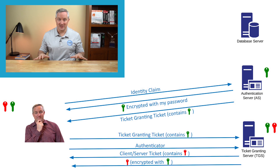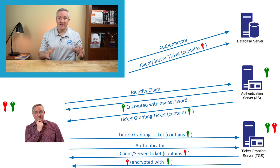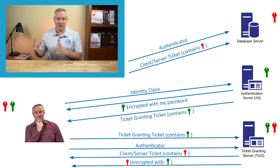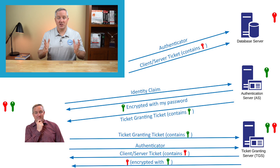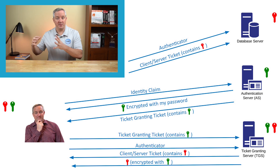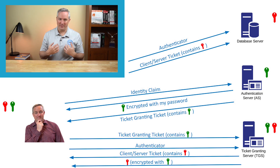After receiving all these messages and tickets, I'm ready to access the database. I send the database server two things: the Client Server Ticket that I received from the Ticket Granting Server, and a new authenticator that includes my Client ID and timestamp, encrypted using the Client Server Session Key. When the database server receives those two messages, it performs a process similar to the one used by the TGS — it first decrypts the Client Server Ticket to retrieve the Client Server Session Key, then uses that key to decrypt my authenticator and verify my identity. Once it does that, it can grant me access to the database.